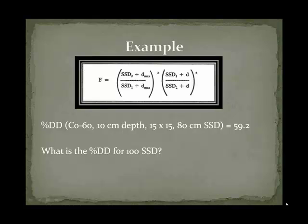Here's an example using our formula. Take a cobalt machine, 10 cm depth, 80 cm SSD. Your percent depth dose is 59.2. What is the percent depth dose for 100 cm SSD? They're going to assume that you know the DMACS for a cobalt machine is 0.5 — it's always 0.5, so they're probably not going to give that to you. Remember that 80 cm SSD is standard for a cobalt machine, so the 100 cm SSD here is an extended SSD problem.